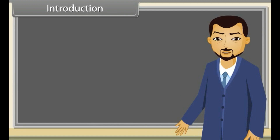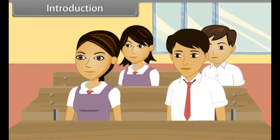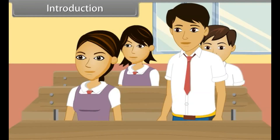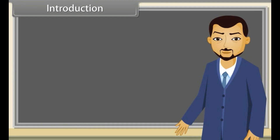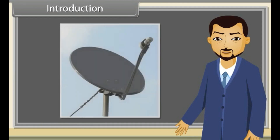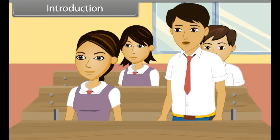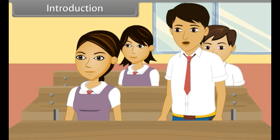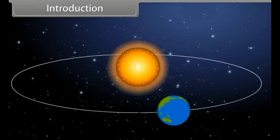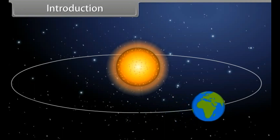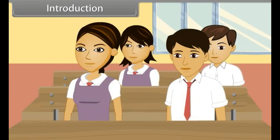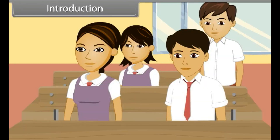Have you ever seen the wheel? What kind of shape it has? Yes, it is circular in shape. How many of you have dish TV at your home? Do you know what kind of shape it has? Yes, it is parabolic in shape. Do you know what kind of path earth follows while revolving around the sun? Yes, it is elliptical in shape.